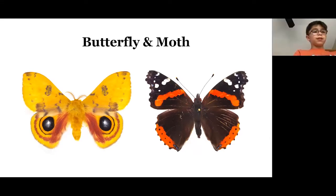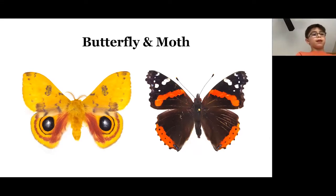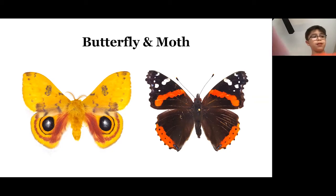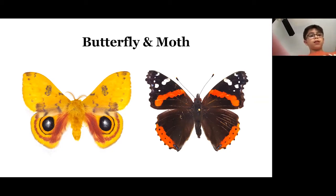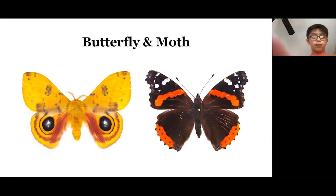On the left is the moth and the right is the butterfly. You can tell because the left is the moth — the body is more furry, and also the eye-shape pattern on the moth is there to protect it from predators.